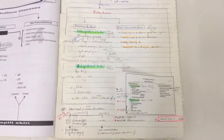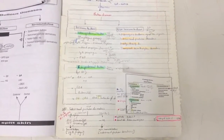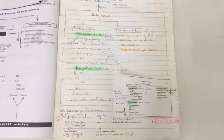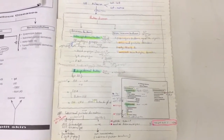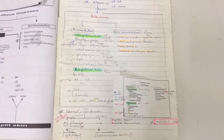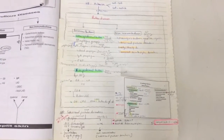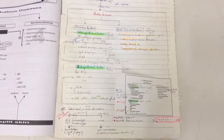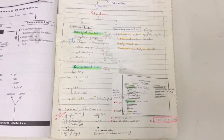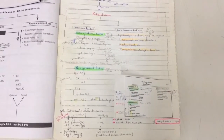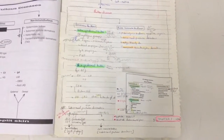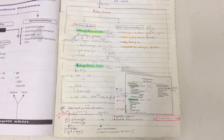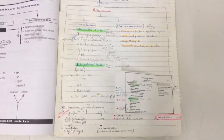There is a slight comment here. Subcorneal pustular dermatosis can be differentiated from IgA pemphigus by direct and indirect immunofluorescence. In subcorneal pustular dermatosis, immunofluorescence is negative. In IgA pemphigus, direct immunofluorescence shows intra-cellular IgA, and indirect immunofluorescence shows circulating IgA, making it immunobullous. If immunofluorescence is negative, it is non-immunobullous — subcorneal pustular dermatosis.